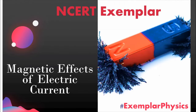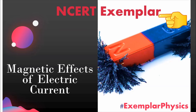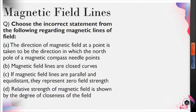Hello everyone, welcome to Example of Physics where we study concepts by solving questions. The topic taken today is from the chapter 'Magnetic Effects of Electric Current,' and the question is taken from the NCERT Exemplar Class 10. The question is on the concept of magnetic field lines.